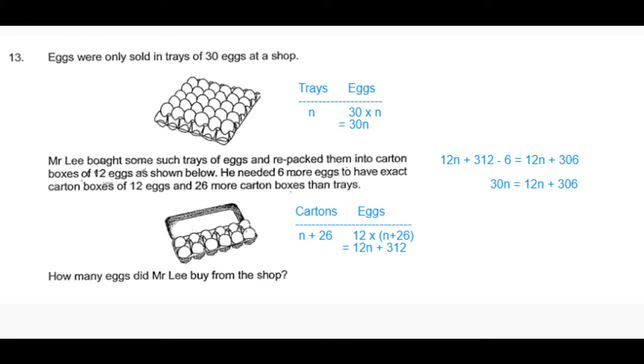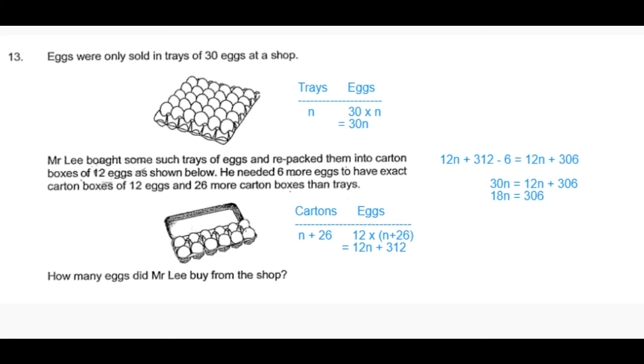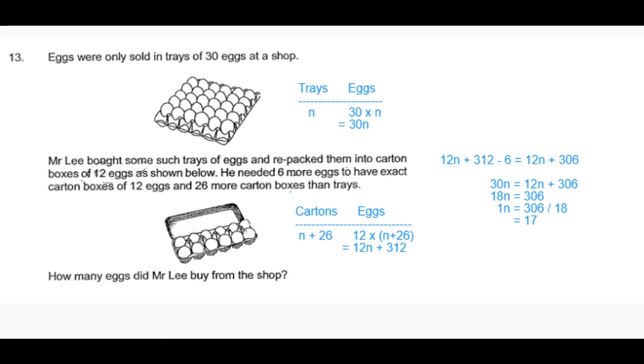From there we get 306 should be equal to 30 minus 12, which is 18n. From there we get the value of 1n to be equal to 306 divided by 18, which is equal to 17.